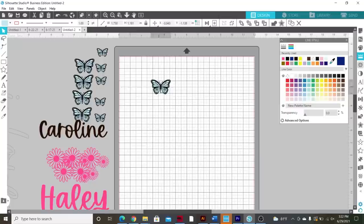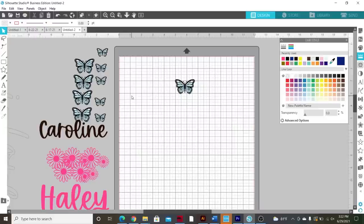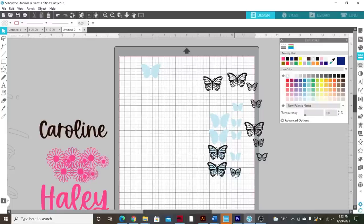So once you have your SVG file it's going to come just like this and it'll actually be ungrouped. So the two pieces are going to be separate. You're going to want the wings to be cut in the holographic and you want the black to be cut just under your black. So we're going to go ahead and ungroup all of these and get them ready to be cut.